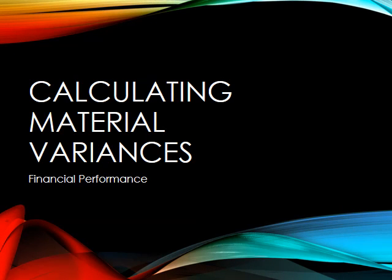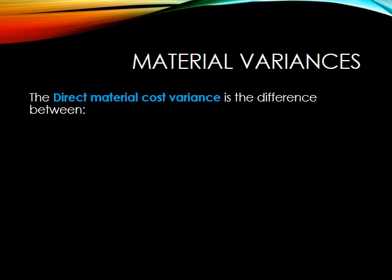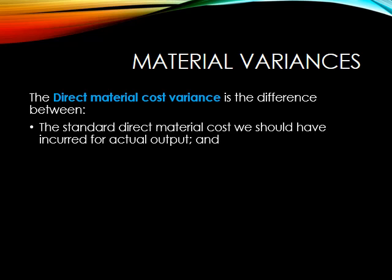This session shall look at how we calculate material variances. The first type of material variance is our direct material cost variance, and that's going to be the difference between the standard amount that we should incur in materials cost for actual output and the amount that we actually incurred.